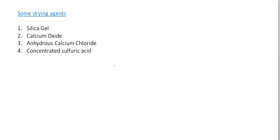There are several drying agents we use to dry gases. We have silica gel — you may be familiar with it from those little packets found in new shoe boxes. Another drying agent is calcium oxide. We also have anhydrous calcium chloride and concentrated sulfuric acid. These are four typical drying agents you will encounter.